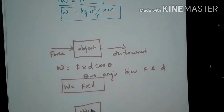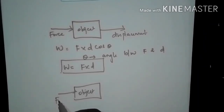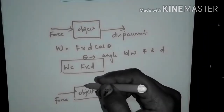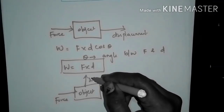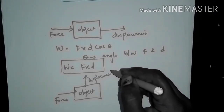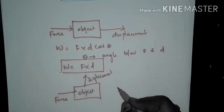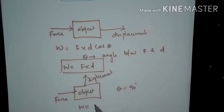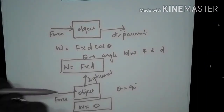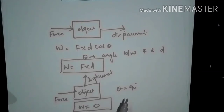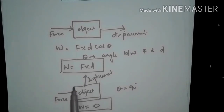If displacement is at a right angle (90°) to the applied force, then cos 90° = 0, so the work done is 0. For example, if force is applied in the left direction but the object is moved upward by some other force, the work done by the first force is 0, since the displacement is perpendicular to the force direction.